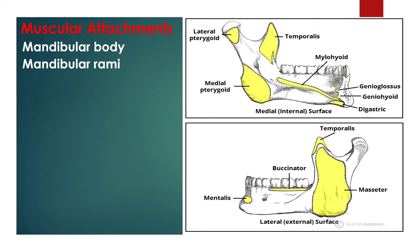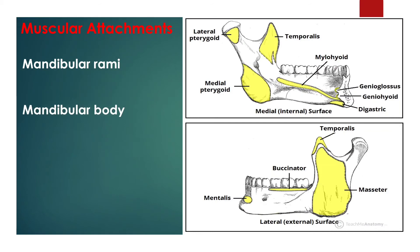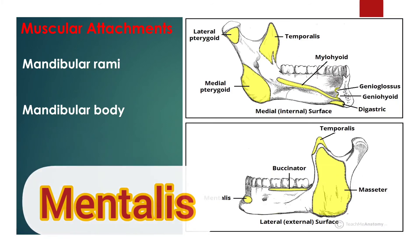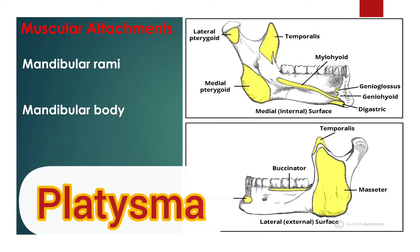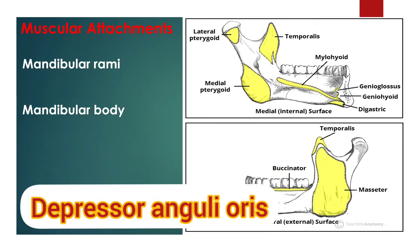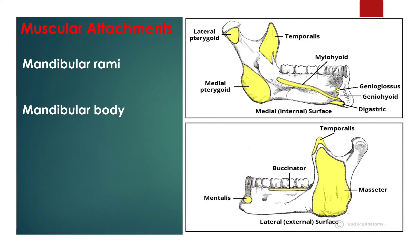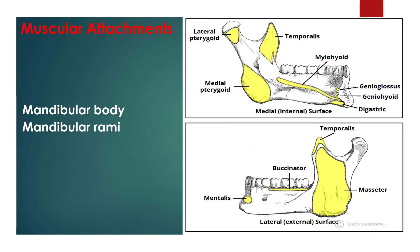Muscle attachment: The mandible serves as the attachment point for various muscles, including the strong muscles of mastication. Mandibular body external and lateral surface: mentalis, buccinator, platysma, depressor labii inferioris, and depressor anguli oris. Internal medial surface: genioglossus, geniohyoid, mylohyoid, and digastric. Mandibular ramus: masseter, temporalis, medial pterygoid, and lateral pterygoid.